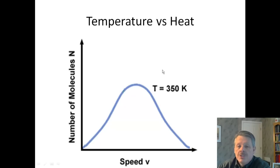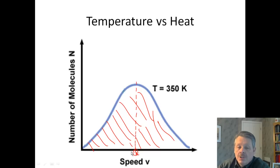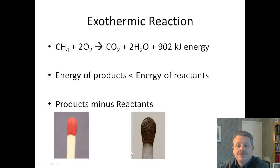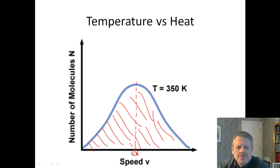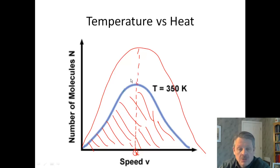Even though the temperature of the coffee is hotter than the temperature of the lake, the lake has more heat in it — more heat capacity and is holding more heat. The temperature of a system is the average kinetic energy of all of the molecules present. Whereas the heat of a system is the total energy of the entire system — that's why the lake has more energy than the cup of coffee. If you add more molecules — a bigger lake — it'll have the same temperature but hold more heat. That's the way you should think of temperature and heat.